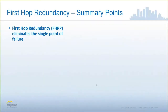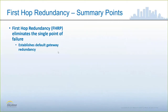There are some things I should like to just call out. Remember, the first hop redundancy protocol — whether it's HSRP or VRRP — eliminates the single point of failure, so that devices who need to talk outside of their subnet can always do so. They always have a default gateway, so default gateway redundancy is what we're getting from it.